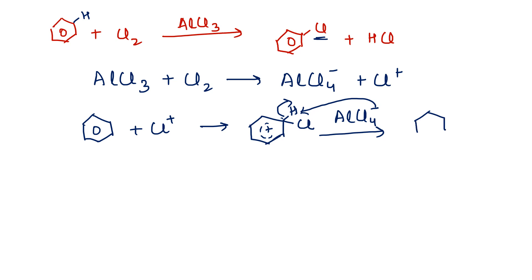The product which is formed is chlorobenzene plus HCl plus AlCl3. In this reaction, AlCl3 is a catalyst because we can recover it back in the whole reaction.